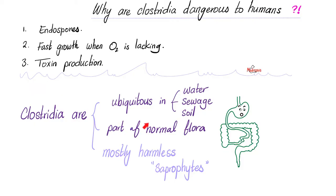Clostridia are ubiquitous — all around you — in water, sewage, and soil. They are part of the normal flora of your gut, mostly harmless saprophytes living on dead plants and dead cells. Why do they pose danger to human beings? Because they can make endospores, because they can make toxins, and because they can grow even when there is no oxygen.